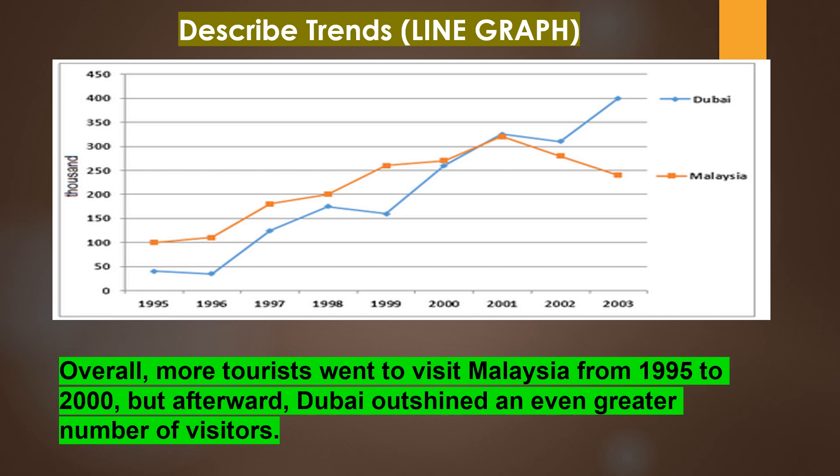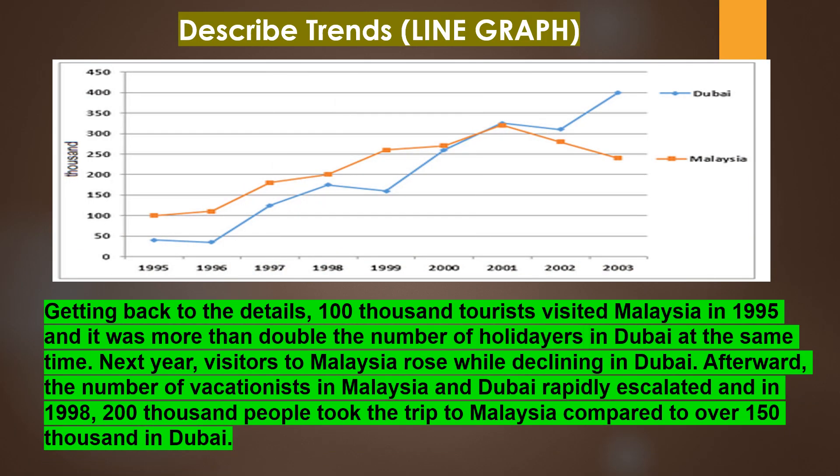Overall, more tourists went to visit Malaysia from 1995 to 2000, but afterward Dubai outshined it with an even greater number of visitors. Getting back to the details, 1,000 tourists visited Malaysia in 1995, and it was more than double the number of holidaymakers in Dubai at the same time. The following year, visitors to Malaysia rose while declining for Dubai. Afterward, the number of vacationers in Malaysia and Dubai rapidly escalated, and in 1998, 200,000 people took the trip to Malaysia compared to over 150,000 in Dubai.